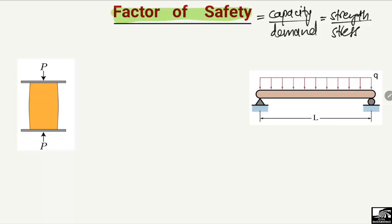Let's explain this with the help of an example. Consider a simply supported beam supported by a hinge and roller support, with a uniformly distributed load Q acting on it. This load is known as the demand on the beam. Let's suppose the stress due to this load acting on the beam is 40 kN per square meter.